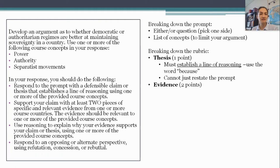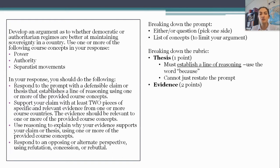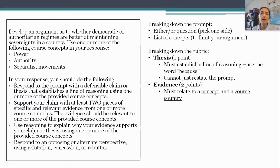The second thing you need to do is support your claim with at least two pieces of specific and relevant evidence from one or more course countries. The evidence should be relevant to one or more of the provided course concepts. This boilerplate will be there at the beginning of the argument essay on your exam, so I'm walking you through it now so you don't have to spend a lot of time reading it when the clock is ticking. Each piece of evidence has to relate to one of those three concepts from the list — in this case power, authority, or separatist movements — and it must relate to a course country.